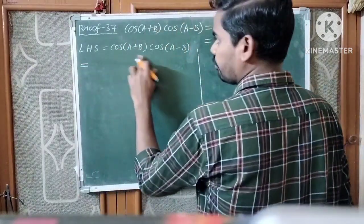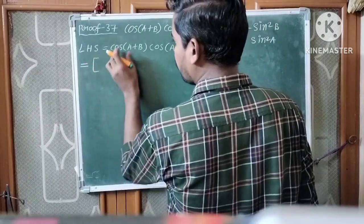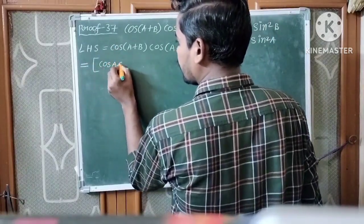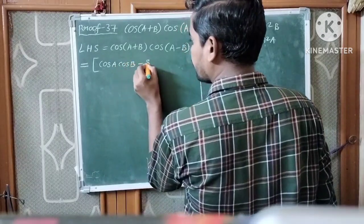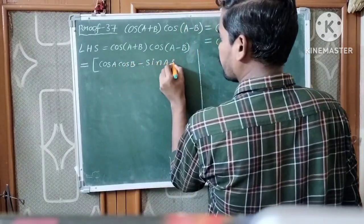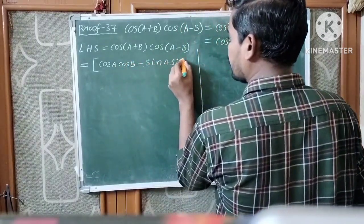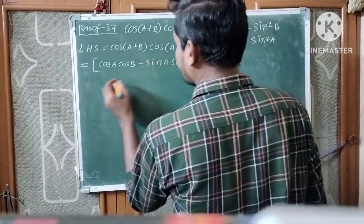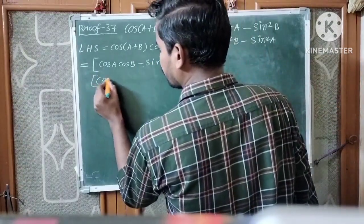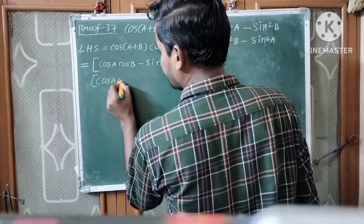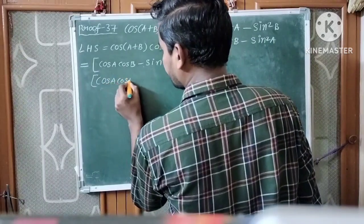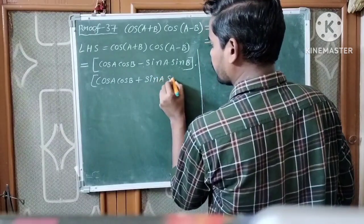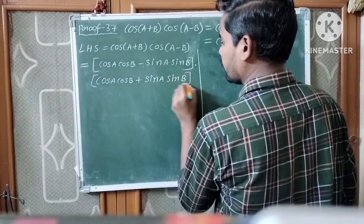Using the compound angle formula, cos(A+B) is equal to cosA·cosB minus sinA·sinB, and cos(A-B) equals cosA·cosB plus sinA·sinB.